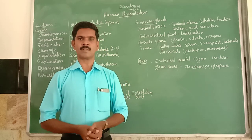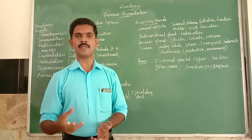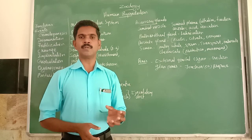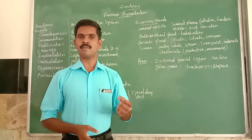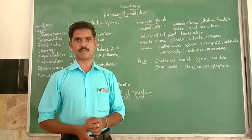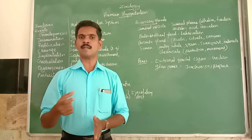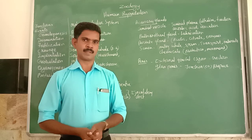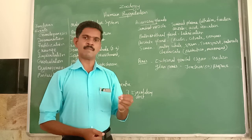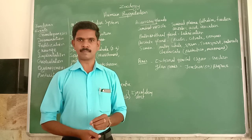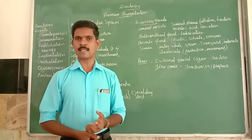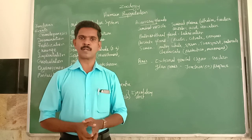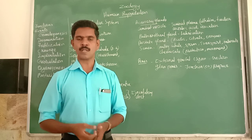The third major function of the reproductive system is giving food to the developing embryo. In human beings, the embryo or young baby is developing inside the uterus of the mother for approximately nine months. The baby gets food and gases through the female reproductive system, which supplies nutrients to the developing baby.